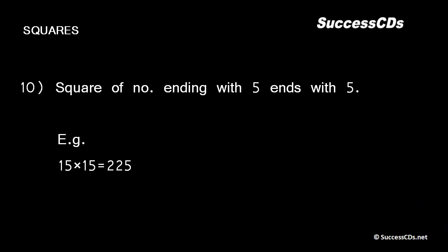The square of a number ending with digit 5 always ends with 5. This one is easy. For example, 5² = 25 and 15² = 225.